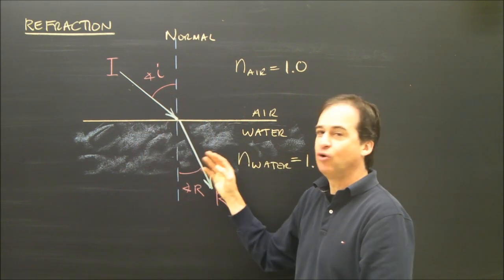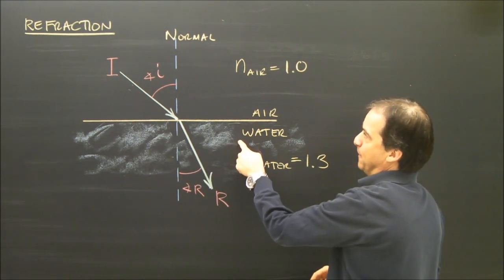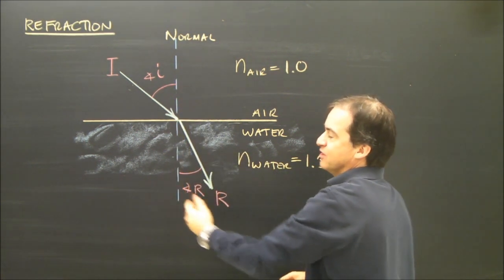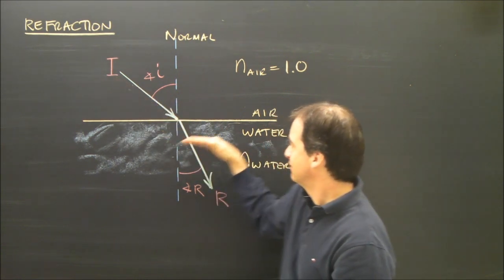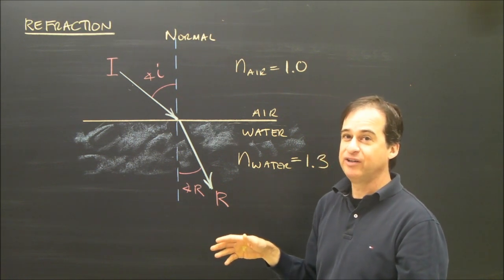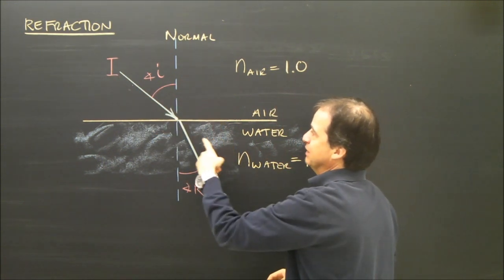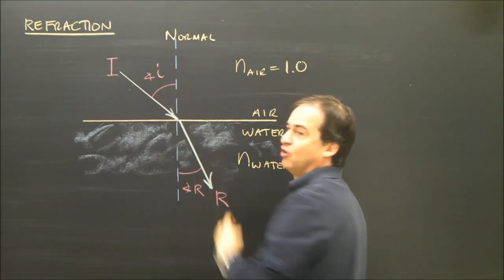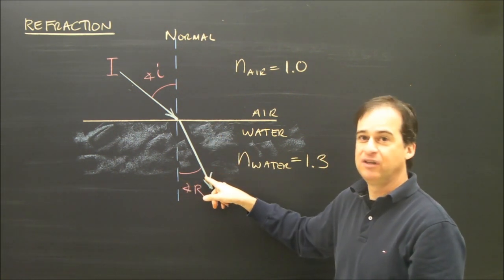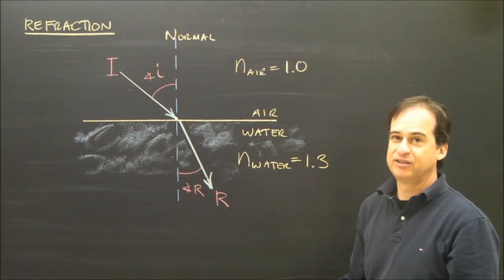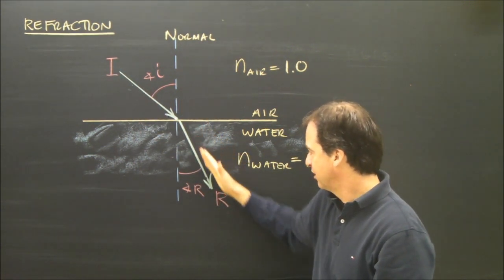This diagram has all the things you need to know about labeling and the calculations. Here's the boundary between air and water. We have a line drawn at 90 degrees — that's called the normal. All our angles are measured from the normal. It would seem easier to measure from the surface, but it doesn't work that way for the equations. This is called the incident ray — the one coming into the water, in the air. The incident ray comes at an angle to the normal called the angle of incidence. When it enters the water, it makes an angle with the normal called the angle of refraction, and this is called the refracted ray.